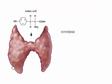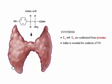Thyroid hormone includes triiodothyronine, T3, and thyroxine, T4. Each is synthesized from tyrosine and stored in the thyroid follicles. Dietary iodine is essential for normal production of thyroid hormone. T3 has three iodine atoms, and T4 has four iodine atoms.